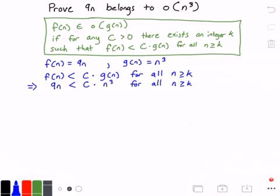Now we must show that for any constant value c, there exists an integer k that makes this statement true. So let's try to solve for k. To do that, I'm going to divide both sides by n, giving us: 9 is less than c times n squared, for all values of n greater than or equal to k.